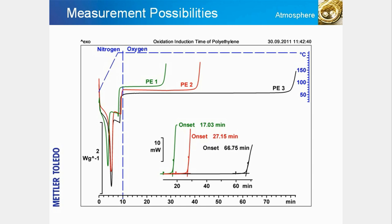The time that elapses before the sample starts to oxidize is known as the oxidation induction time, or OIT. The OIT is directly related to the relative stability of a material at a particular temperature. The example shows OIT curves of three polyethylene samples stabilized to different extents, measured at 210 degrees Celsius in open crucibles. The difference in oxidation stability of the three samples is quite considerable.